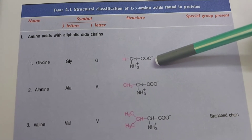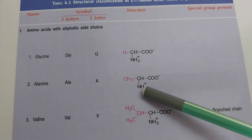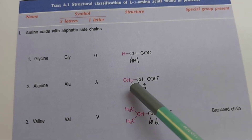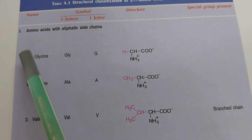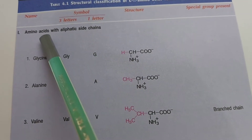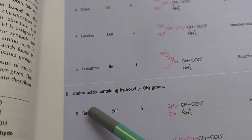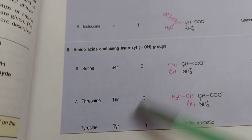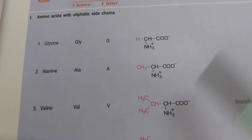The simplest amino acid has only a hydrogen ion as its side chain — this is glycine. Alanine has a CH3 methyl group as its side chain. These amino acids are classified as having aliphatic side chains. Another group has a hydroxyl group in the side chain — these include serine and threonine. These are the classifications of amino acids based on their chemical structures.